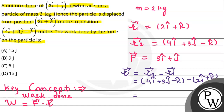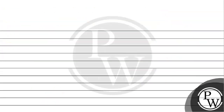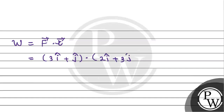Minus R1, which is 2 hat I plus hat K. This will give us 4 minus 2, resulting in the displacement vector of 2 hat I plus 3 hat J minus 2 hat K. Now the work done will be equal to the force vector dot the displacement vector, which is 3 hat I plus hat J dot product with 2 hat I plus 3 hat J minus 2 hat K.